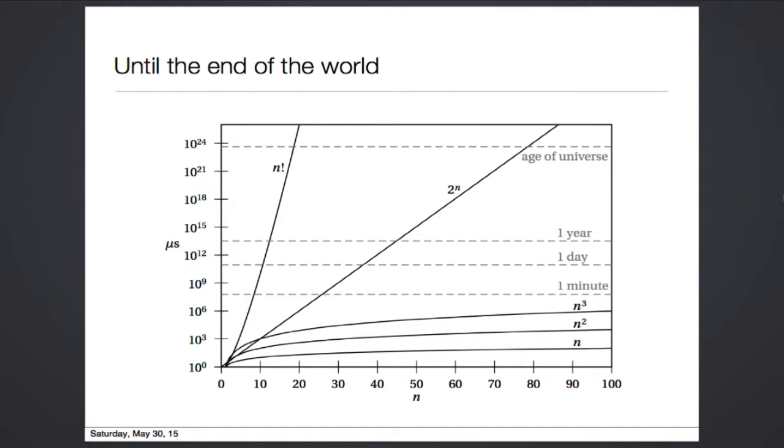And this has real implications. So let's plot some polynomials, 2 to the n and n factorial on a log plot. The y-axis here is the logarithm of the number of microseconds that it takes for an algorithm to run. If you have an algorithm that runs in time n or n squared or n cubed, you see that you get very similar looking lines here. And by the time n is 90 or 100, you can still solve these problems in under a minute.